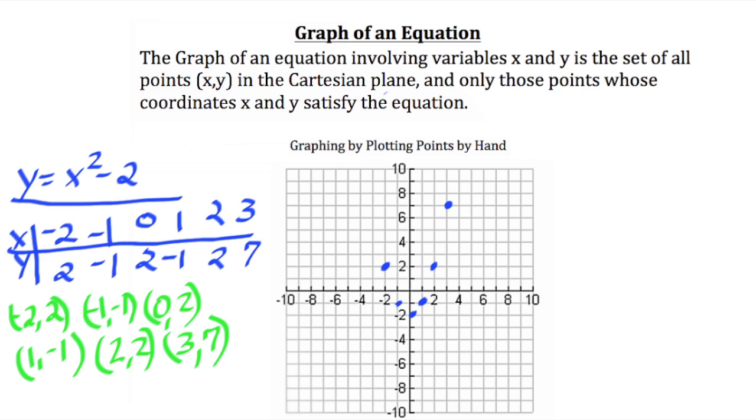When we plot the points, this is what they look like on the graph. Now if we connect the points, we get a graph that roughly looks like so. And that is the graphic picture of solving the equation y equals x squared minus 2.